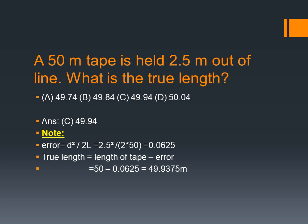The correction formula is D² divided by 2L, where D is 2.5 meters (the offset) and L is the length of the tape.